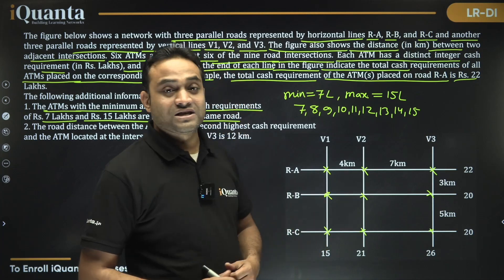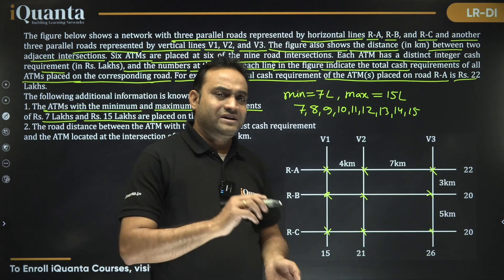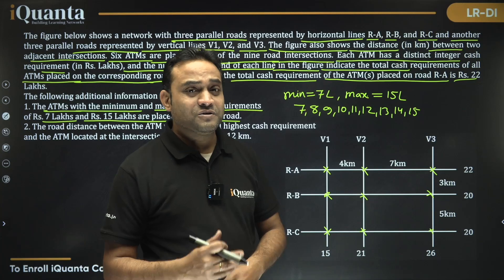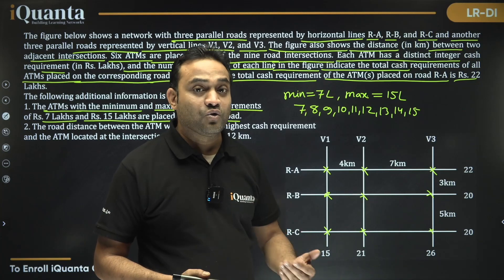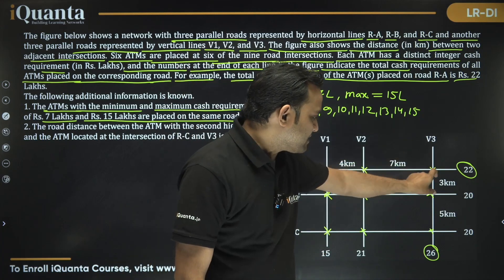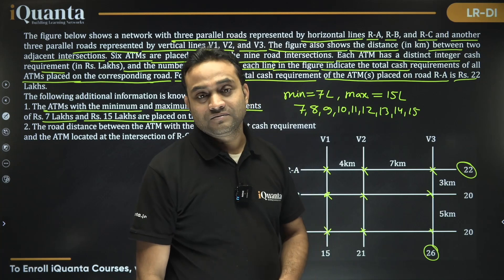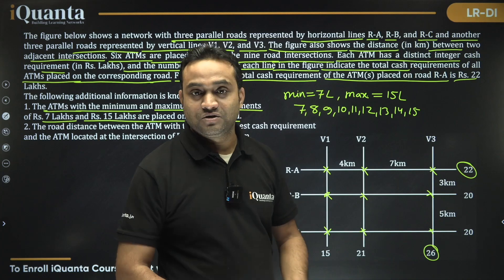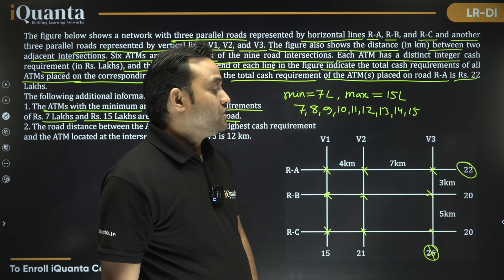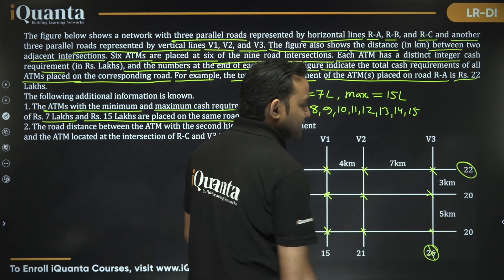Since 7 and 15 are on the same road, their sum is 22. Looking at the road totals, only roads with sum 22 or 26 are candidates. If 7 and 15 are on the road with sum 26, the third ATM would need to be 4 lakhs, which is impossible since all values must be between 7 and 15. So 7 and 15 must be on the road with total 26.